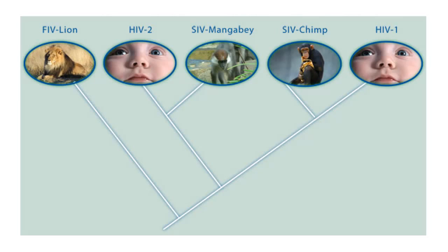When we say HIV, we usually mean HIV type 1. There's also HIV type 2, which likely evolved independently in a completely different jump from a different animal source. HIV-1 appears to have jumped from chimpanzees to humans, and HIV-2 from sooty mangabeys.